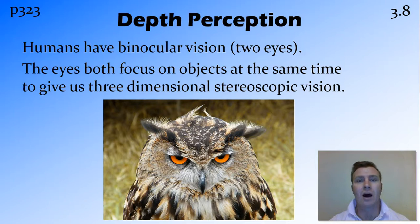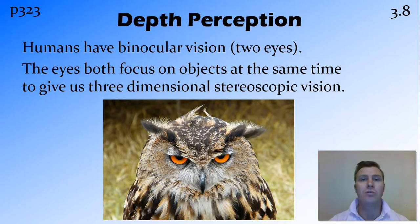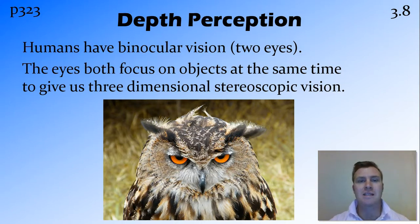This means we have two eyes that are looking at the same thing, and these eyes focus on an object at the same time and give us this stereoscopic — stereo meaning two, scopic meaning scope or eye — vision with a three-dimensional aspect to it, so that we can see this depth and know whether things are closer to us or further away from us.